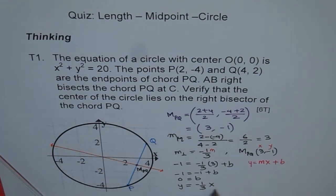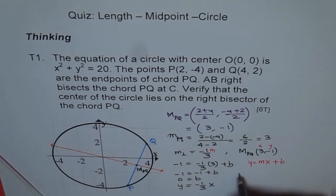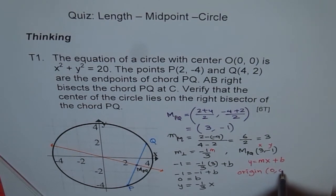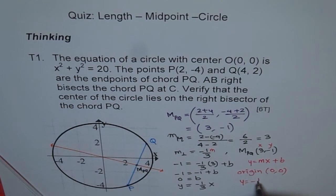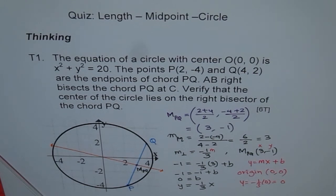As you can see, the point (0, 0) lies on this line. You can verify: if x = 0, y will be 0. So if we test the origin (0, 0) and plug it in — y = -1/3 × 0 = 0 — that means the origin is on the right bisector of the chord PQ. That is the proof.